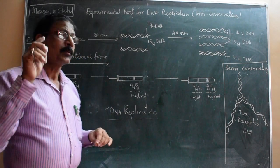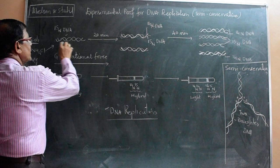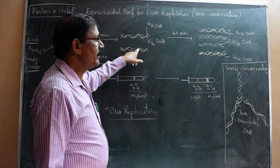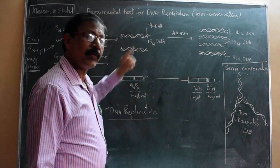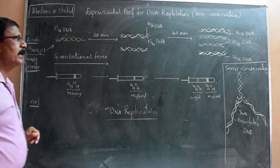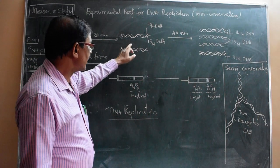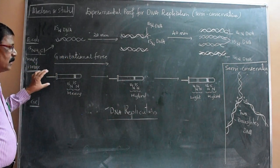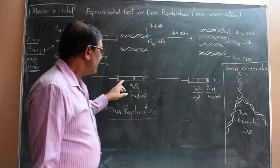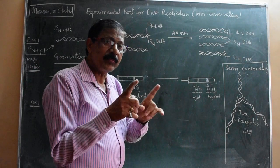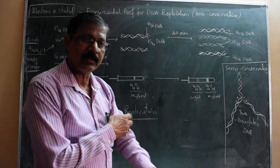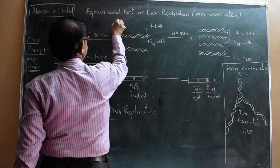E. coli divides every 20 minutes, so one DNA converts to two DNA. One DNA strand contains 14N and another strand contains 15N - because the bacteria was grown in 15N-NH4Cl, so 15N is incorporated into DNA. Therefore one heavy DNA and one normal DNA can be seen - that is called the hybrid. By centrifugation force using cesium chloride, we can see 14N and 15N combination - one strand is 14N, one strand is 15N - that is a hybrid. This is the first generation.